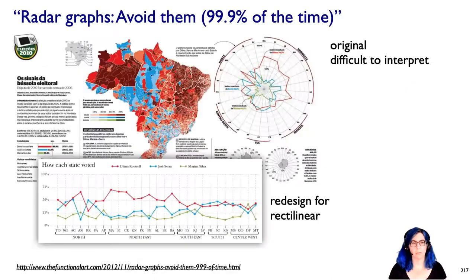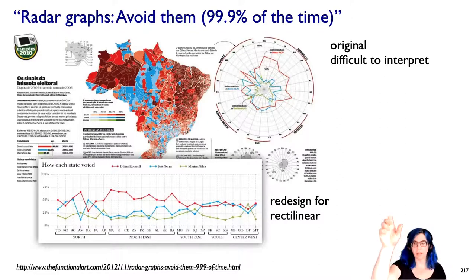Some people have gone so far as to say avoid radar graphs 99.9% of the time, an argument from Alberto Cairo, a data journalist, who did this redesign comparing the radial version of the plot that you see above to this rectilinear version below. And this question of how are you more able to actually tell apart what's going on? There is a lot that is easier to directly perceive with that rectilinear layout.